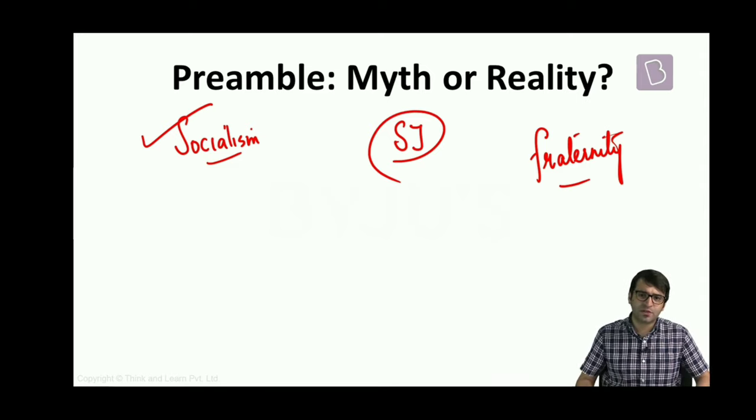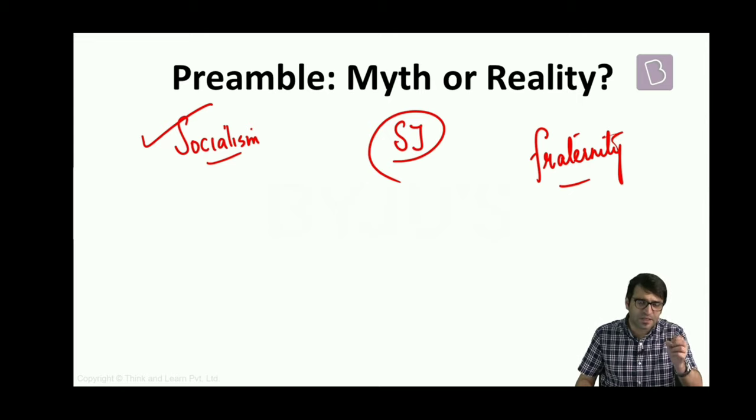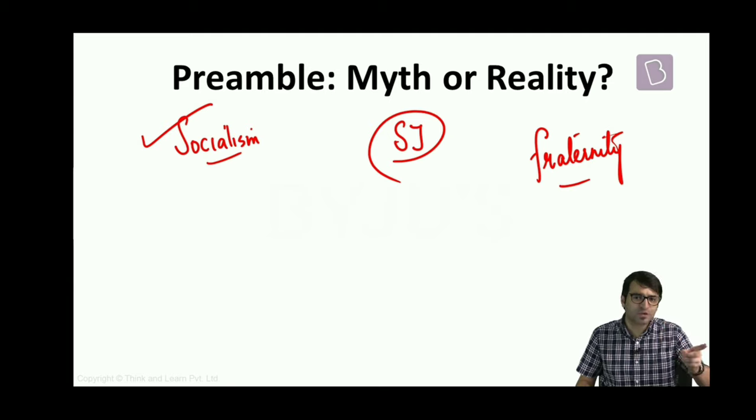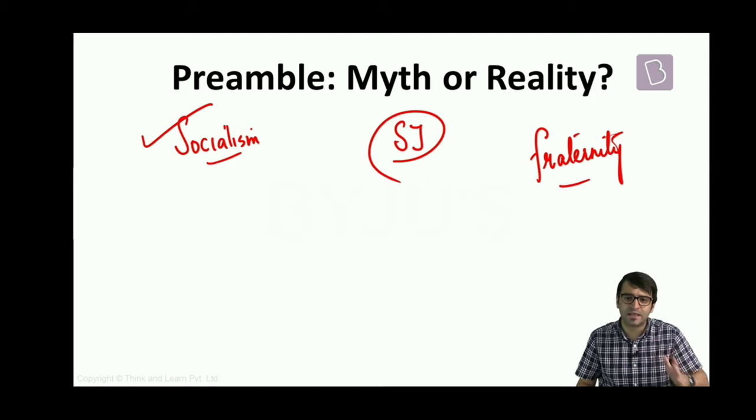If the objective of the Indian constitution is liberty of thought and expression, then why is it that if some use their freedom of speech and expression and ask legitimate questions to the government, they are labeled as anti-national? Why is it that movies are getting banned? Books are getting banned? Theaters are getting banned?